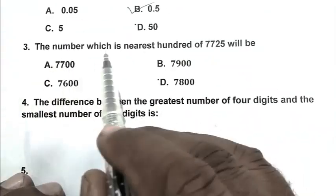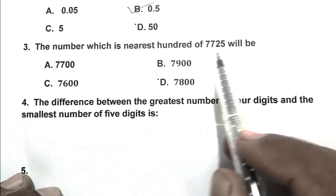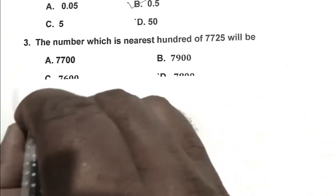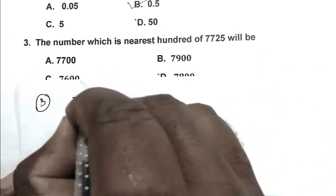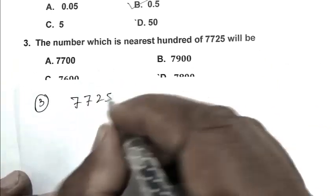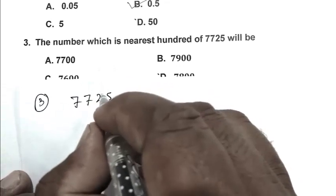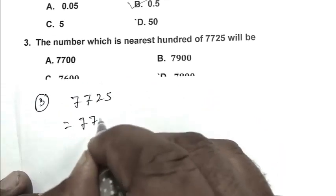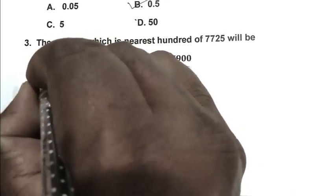Question number 3: The number which is nearest hundred of 7725 will be? So the number is 7725. Here, the tens place is 2, which is less than 5, so it becomes 7700. A is the right answer.